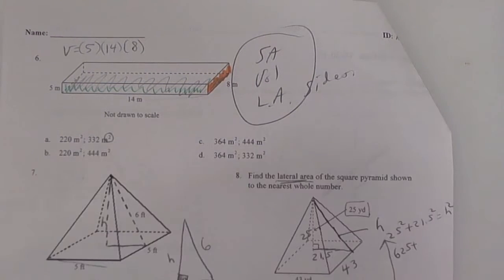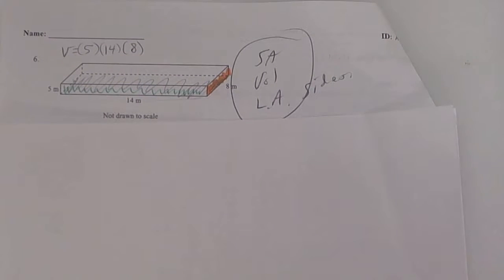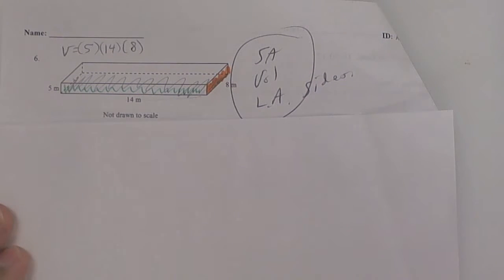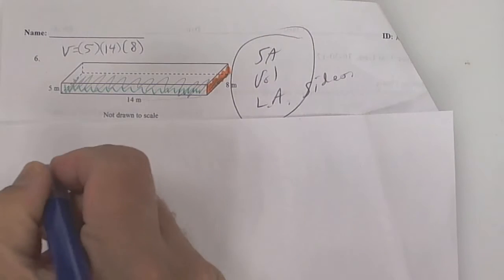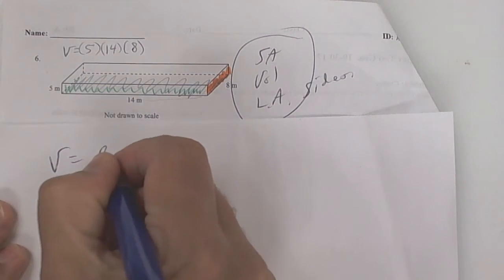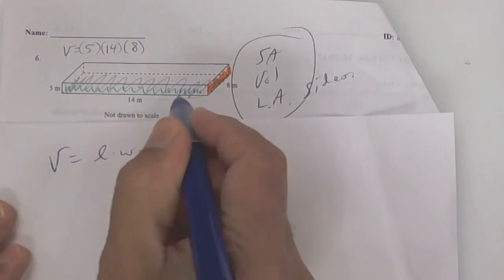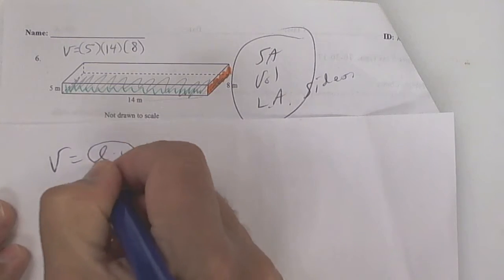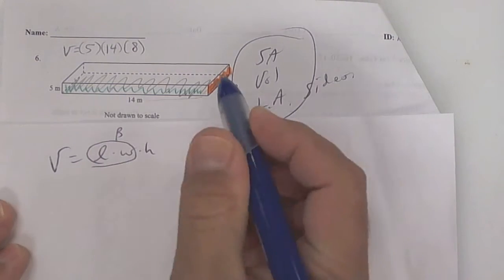Let's take a look up here. I want you to look carefully at this. Volume is just length times width times height. For this one, this is your big B - that's the bottom. The bottom is 14 by 8, the bottom of this box.